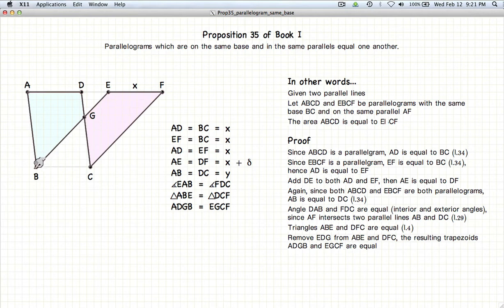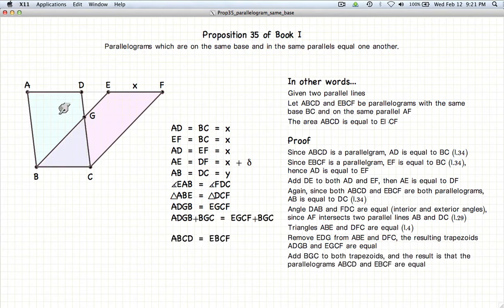And finally, since the triangle BGC is common to both parallelograms, if we add it to these two polygons, we have the area of ADCB is equal to this little purple triangle plus the blue area. And we have the parallelogram EFCB is equal to the pink area plus the little purple triangle. And consequently, the entire parallelogram is equal in area to this parallelogram. So any two parallelograms that share the same parallels and the same base are equal.